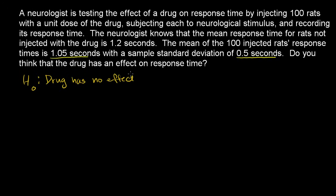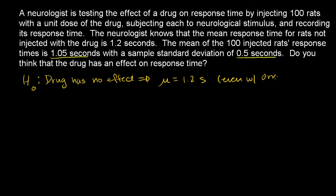Another way to think about the null hypothesis is that the mean of the rats taking the drug should still be 1.2 seconds, even with the drug. So that's essentially saying it has no effect, because we know that if you don't give the drug, the mean response time is 1.2 seconds.